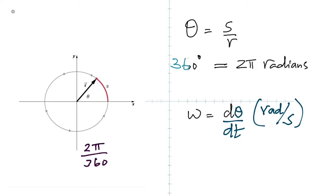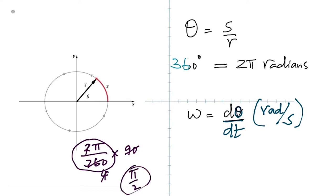Omega is instead of velocity. How do we define acceleration in linear motion? Acceleration is change in velocity by time — dv/dt is acceleration. We're going to do the same thing here. Radians per second is the unit.